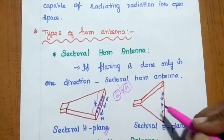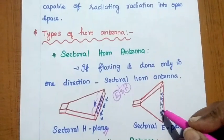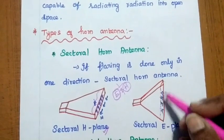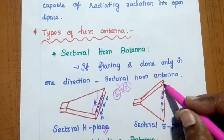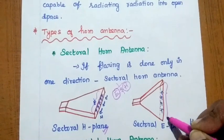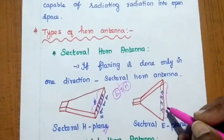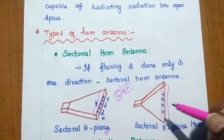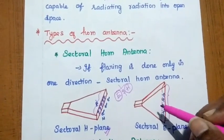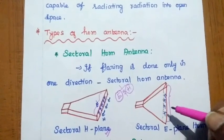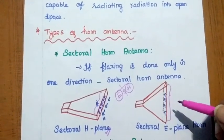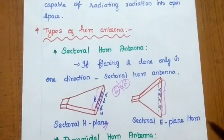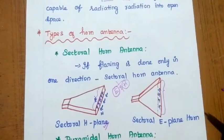Here the electric field is in this direction, and the flaring is done in this direction as well — the horn is parallel to the electric field. So that is called the sectoral E-plane horn antenna.